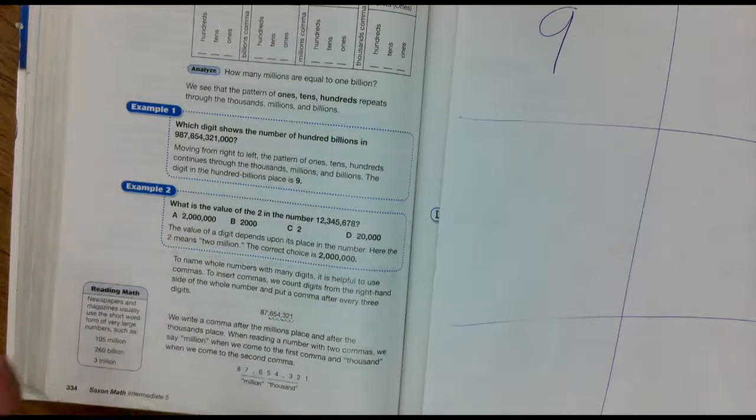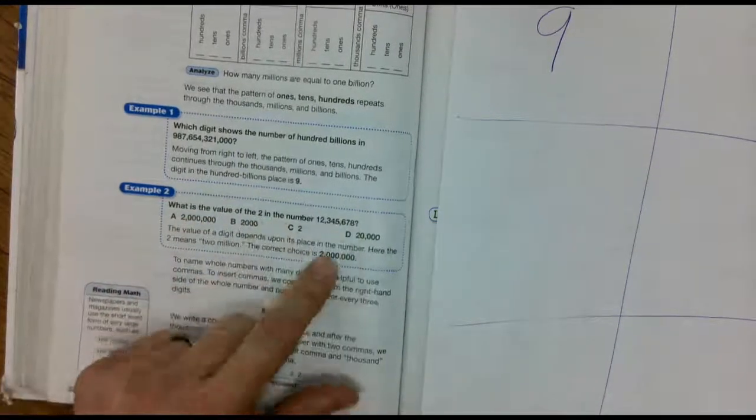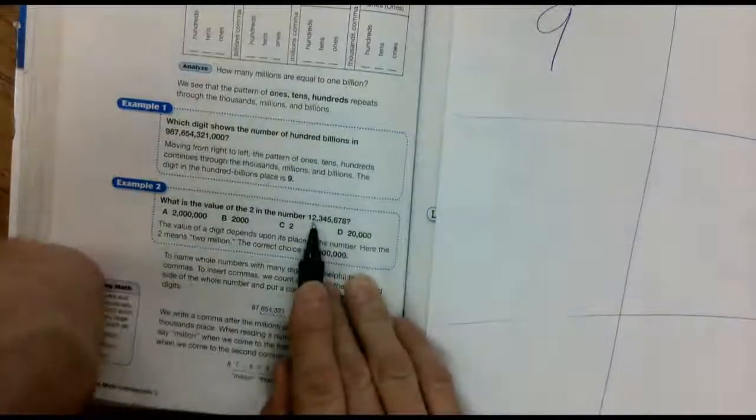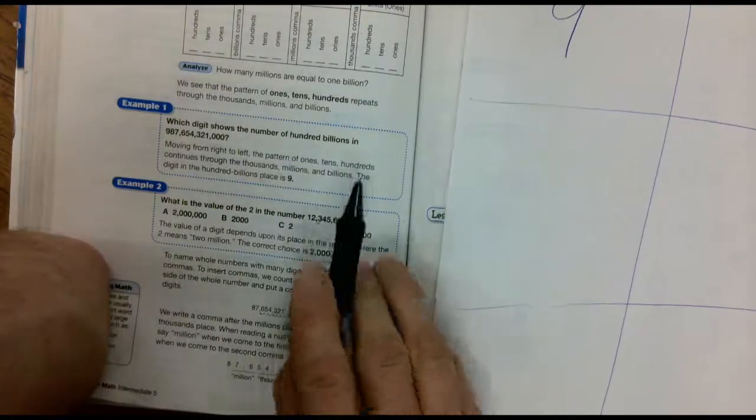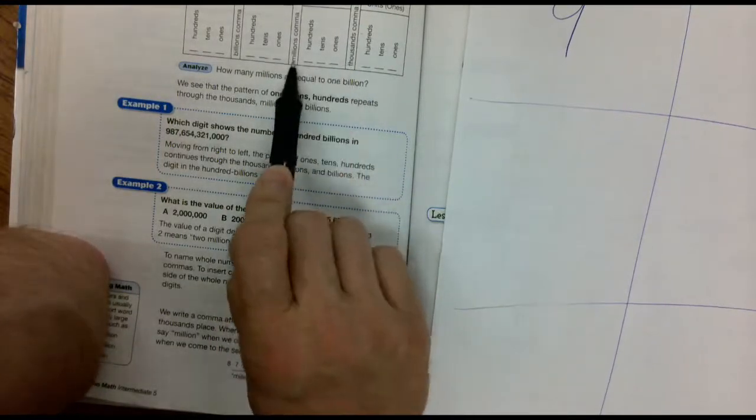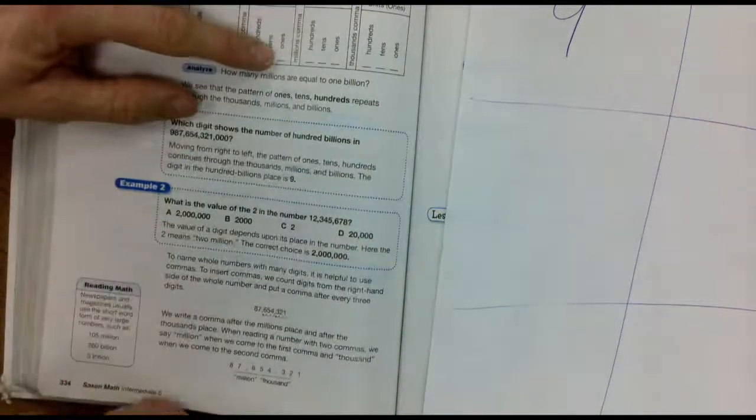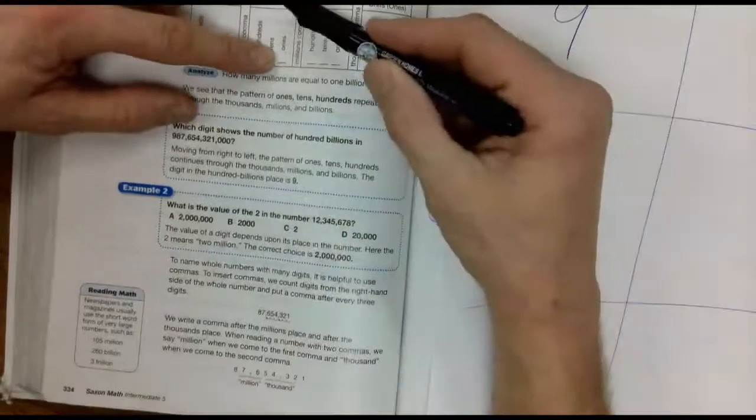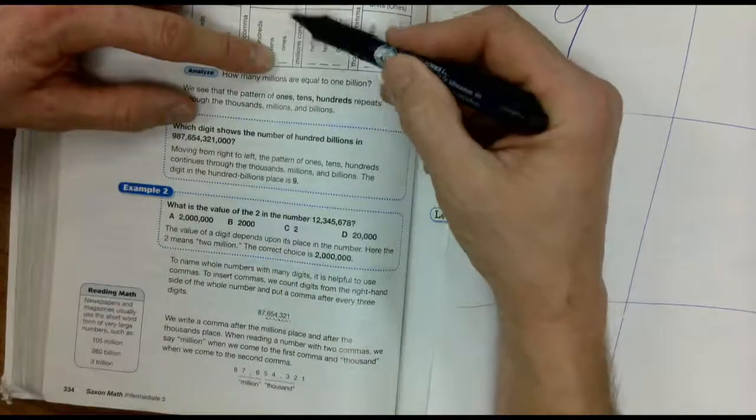Number two. What is the value of the two in this number? So we're looking for the two. Okay, I see one comma, I see two commas. It would be right here past that second comma.